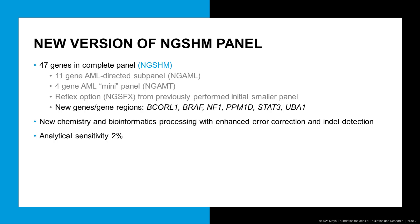The BRAF gene was added because, even though it is present at low frequency in AML cases, it presents a possible therapeutic target. NF1, or neurofibromatosis 1 gene, was added to cover the entirety of genetic alterations that can be seen in juvenile myelomonocytic leukemia, or JMML, and make our coverage for rasopathy-type diseases more complete. The PPM1D gene, which encodes a tumor suppressor, was felt to be important because it is more frequently found mutated in patients who have secondary AML or therapy-related myeloid neoplasms.